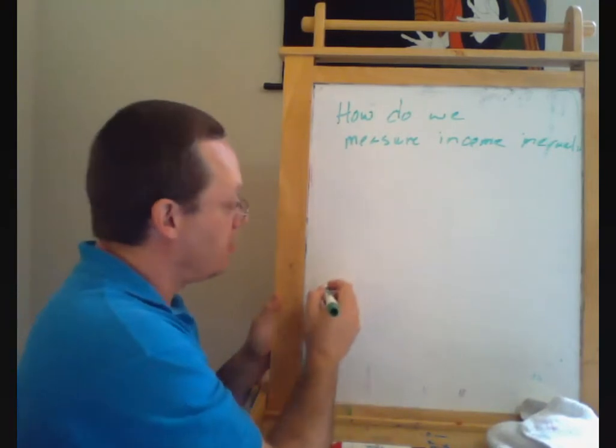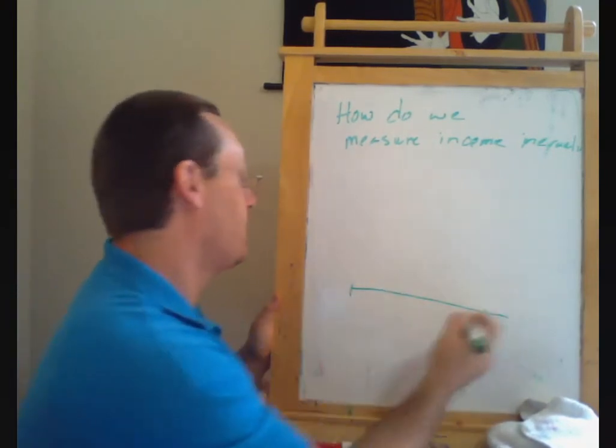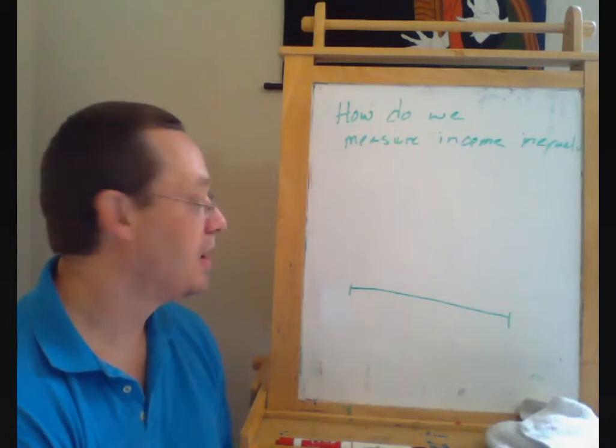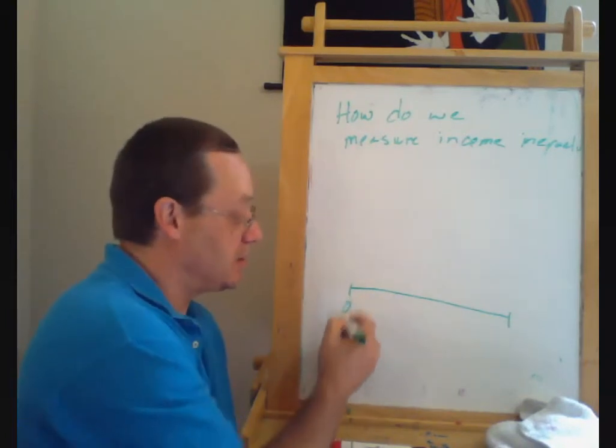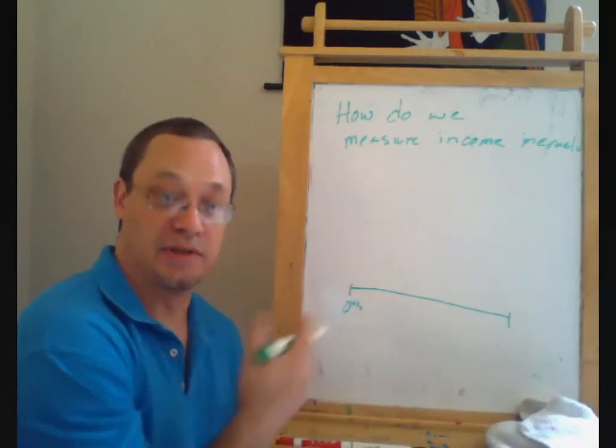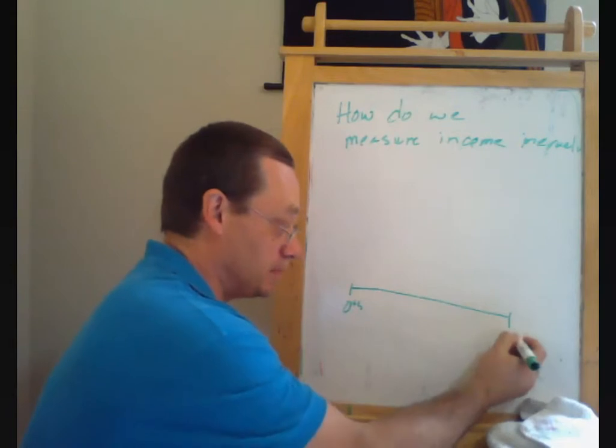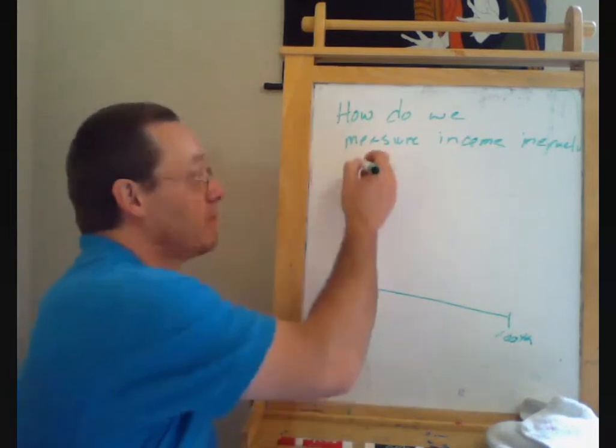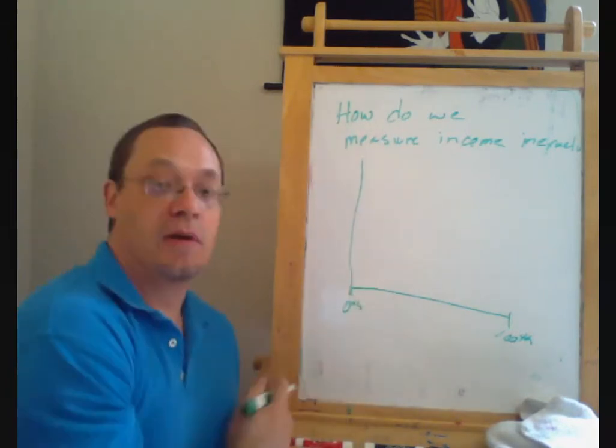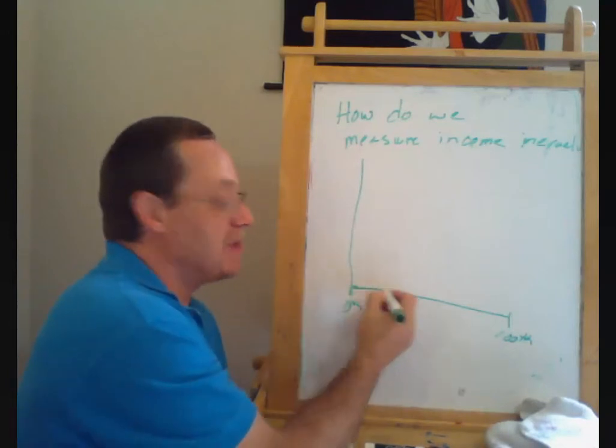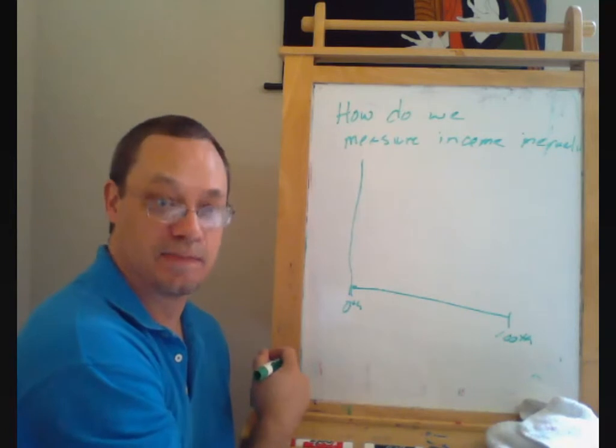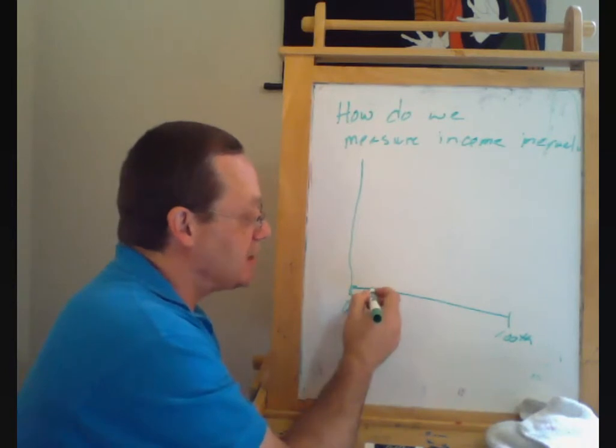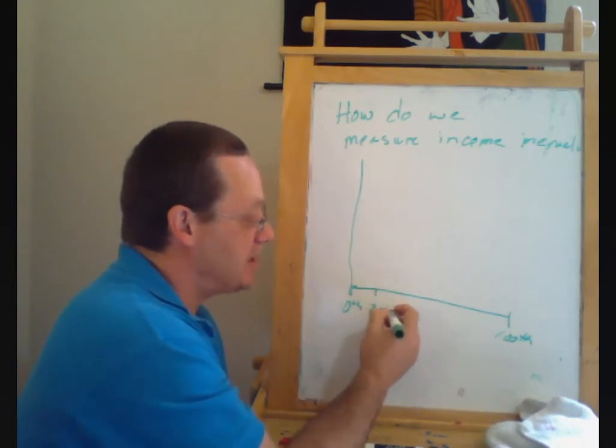but what we do here is we think about lining up all the populations from lowest income to highest income. And so here's the zeroth percentile, the person at the lowest point in the income distribution. And here's the person at the 100th percentile, at the highest point of the income distribution. And we're going to keep track of, as we add up the incomes of everyone up to that point, how much of total national income have we added up to?